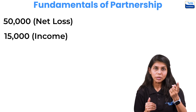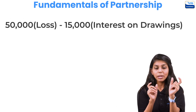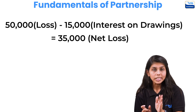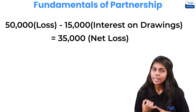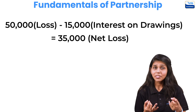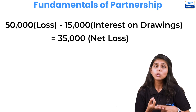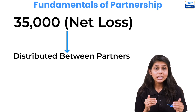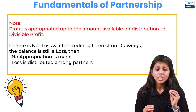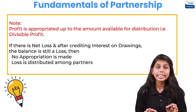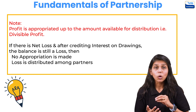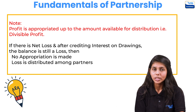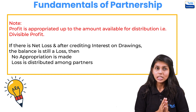We are preparing the P&L Appropriation Account from the viewpoint of the firm. For the firm, interest on drawings is income. So fifty thousand loss minus fifteen thousand interest on drawings still leaves a loss of thirty-five thousand. If there is still a loss even after interest on drawings, no appropriation is made — no interest on capital, no salary or commission to partners, no transfer to reserves. The net loss of thirty-five thousand is directly distributed between the partners. Remember: profit is appropriated only up to the amount available for distribution.